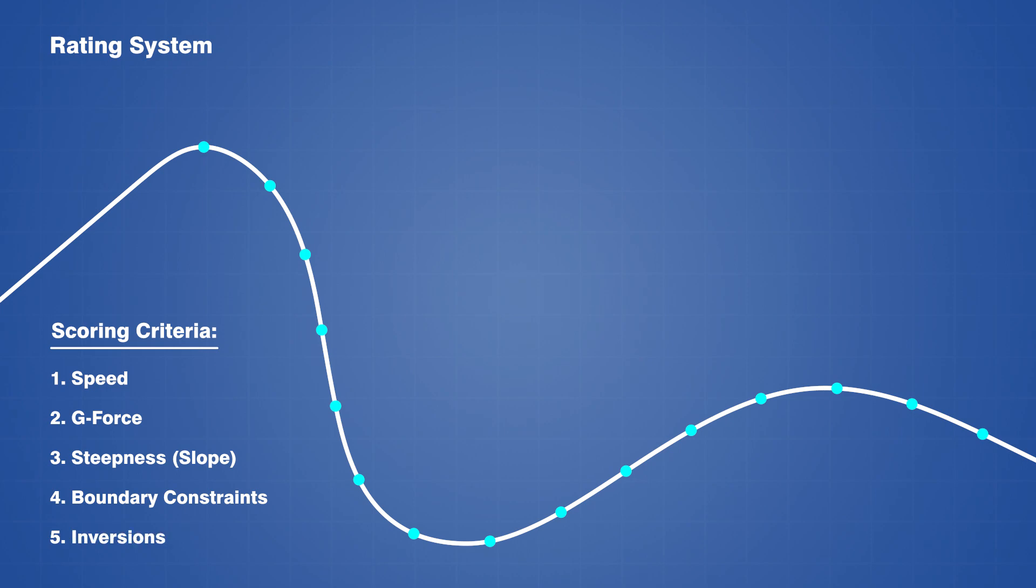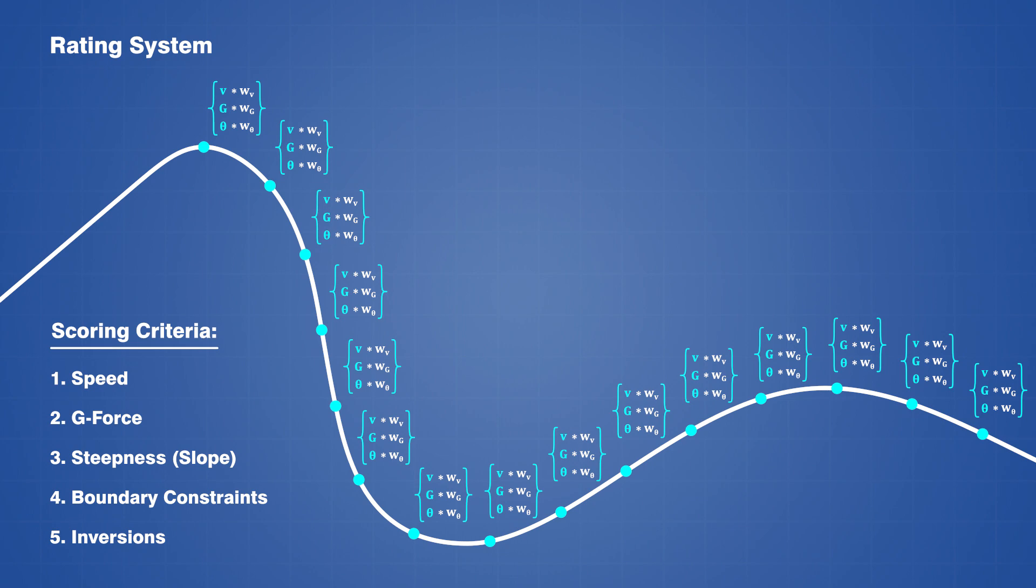To generate a score for a given track spline, the speed, g-force, and slope values are first normalized at every node, and each one is multiplied by a weight that is assigned to the corresponding parameter. The scoring algorithm then traverses along the spline and it adds each weighted value to the total score, but only if that value does not violate a constraint. If the speed or g-force falls outside of an allowable range, then the non-compliant value will not contribute to the score, and instead the algorithm will apply a deduction.